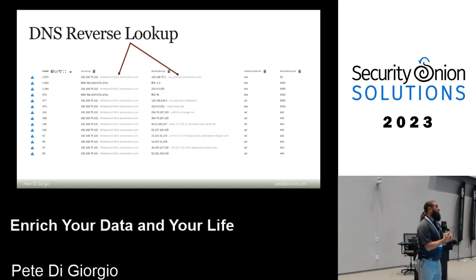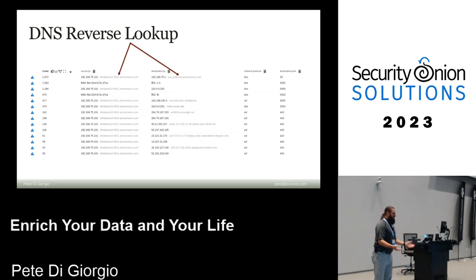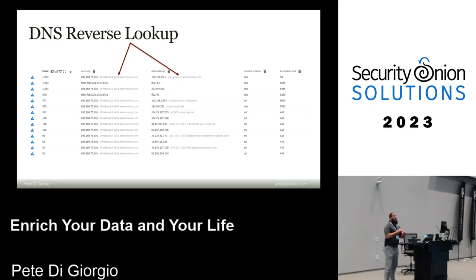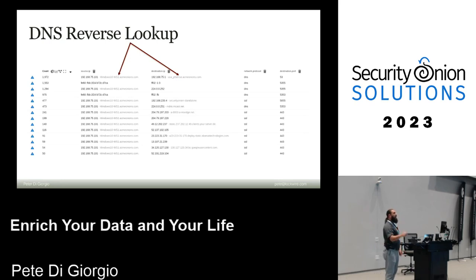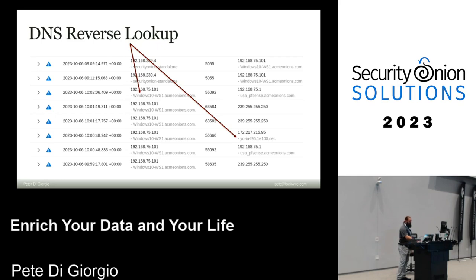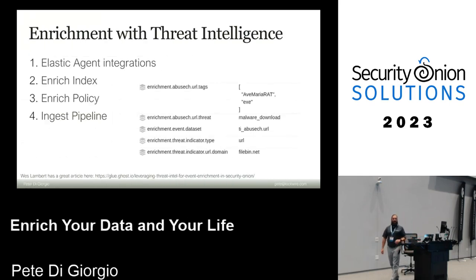Instead of looking at IPs, you're now getting human-readable format that might provide context. You get a lot more out of your DNS server. There is a cost - your DNS reverse lookups are going to go up, though it didn't seem to impact the browser too much. In some environments there's a concern for operational security, so think through which DNS server it's going to and what the recursive lookups are. But it's a great opportunity to provide your analysts something human-readable so they can go, 'oh, that means something different to me now.'